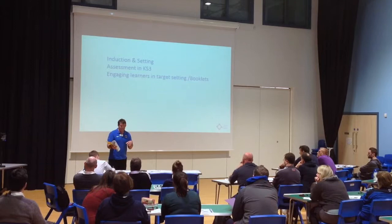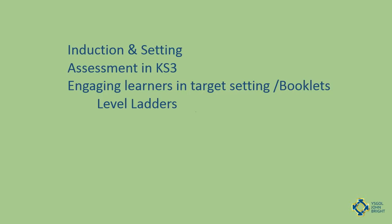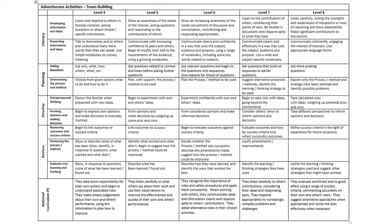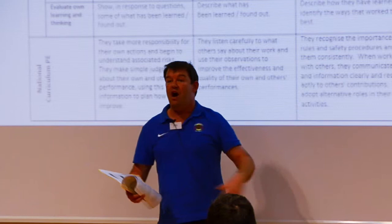Then we use level ladders. The idea is that if a particular person was graded at level five and they showed some characteristics of level six, then next time they sit down ready to do that same activity in year eight, they can write a target statement using these success criteria — the same criteria that the teachers are going to use to assess them. That allows the student to take ownership of their own learning to a degree.